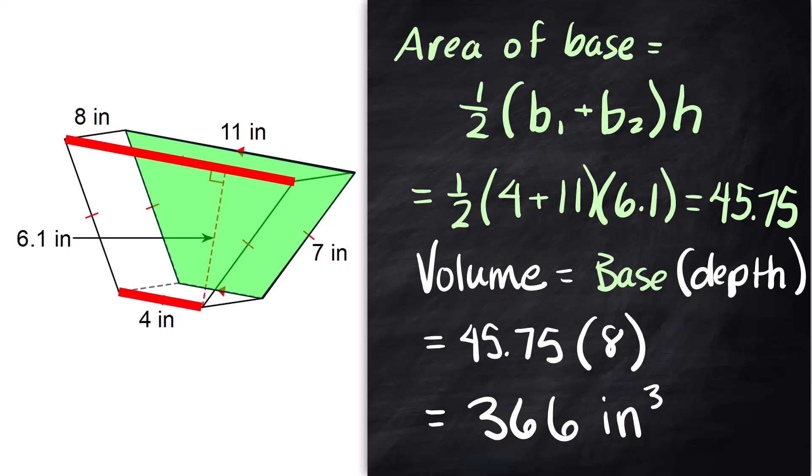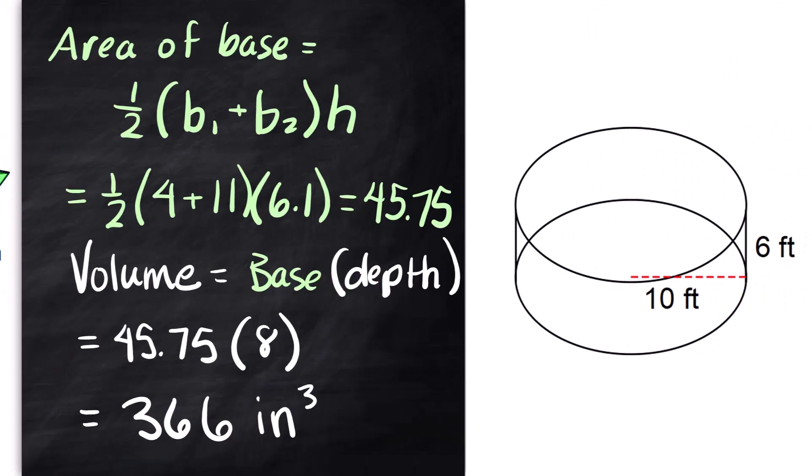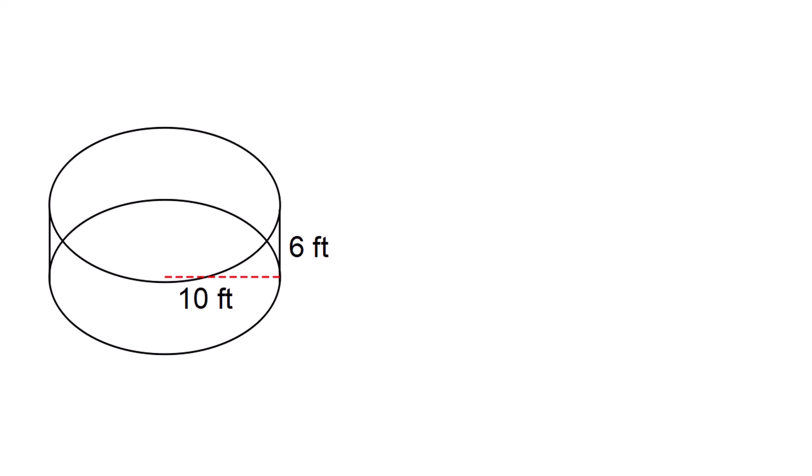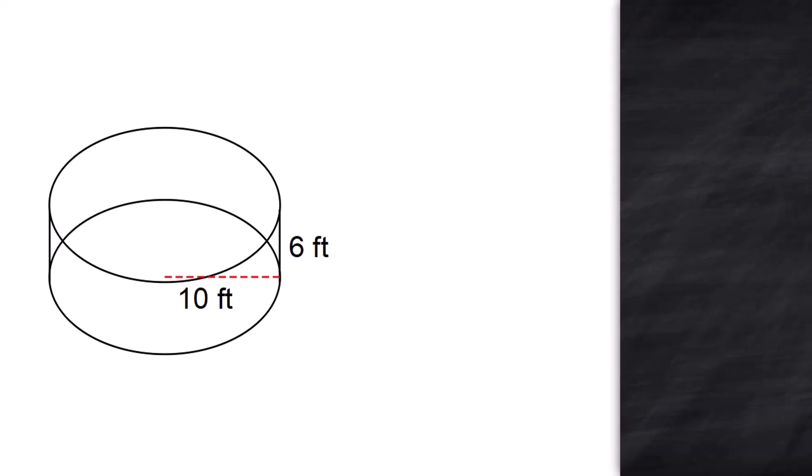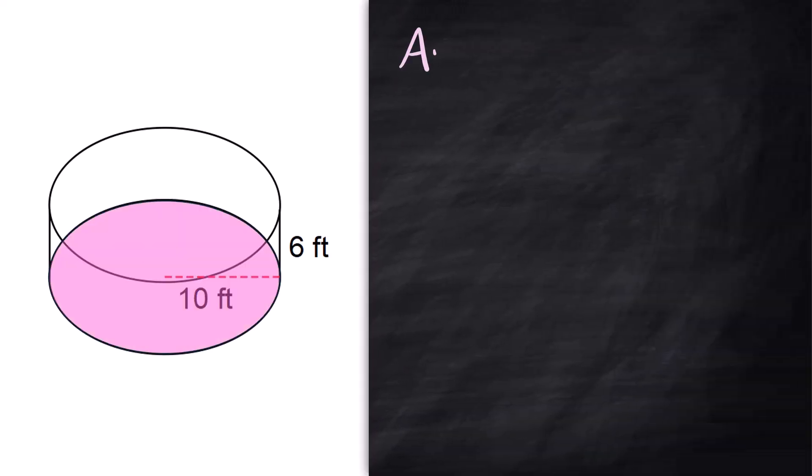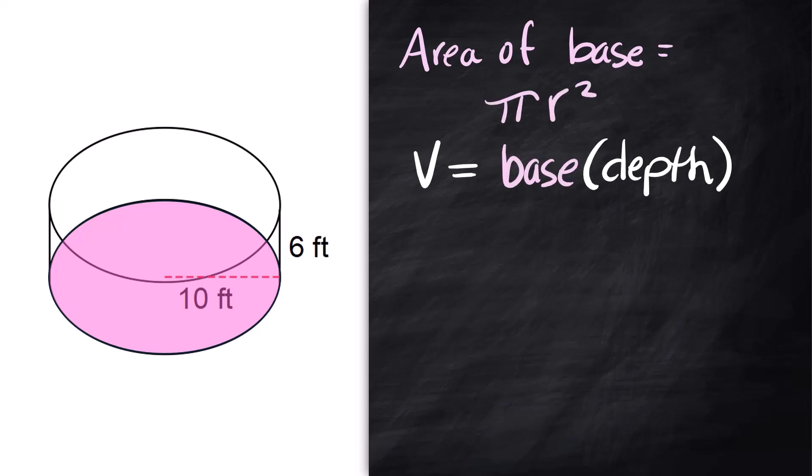Once you figure out how to set these up the math part's not hard. Let's do a cylinder or a can or a swimming pool or however you want to think about this. We still need to find the area of the base well the shape is a circle so the area of a circle is pi r squared and the volume is going to be the base times the depth or the height however you want to think about it so we're going to go pi times 10 squared because that's the radius times 6.